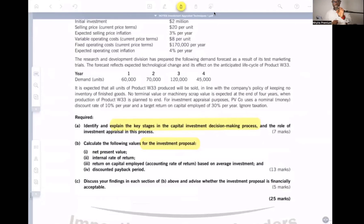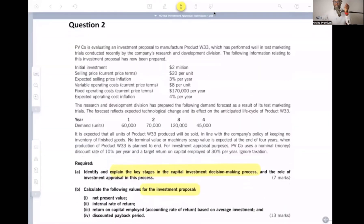It's to calculate the following values for the investment proposals. One is NPV. Two, internal rate of return. We'll come to that. Three, is return on capital employed or the accounting rate of return, if you remember. And then four is the discounted payback period. And we'll talk about that as well in a moment. So let's go read the question.